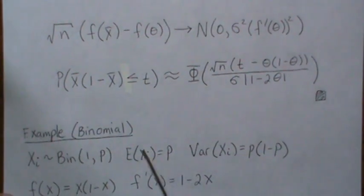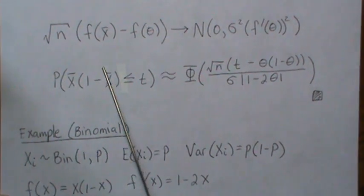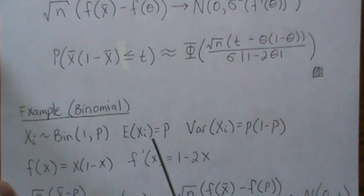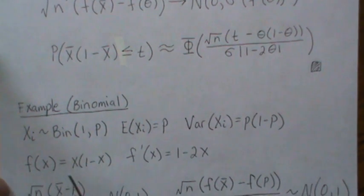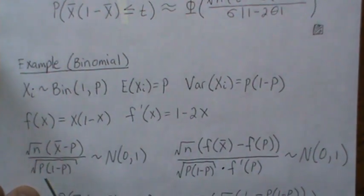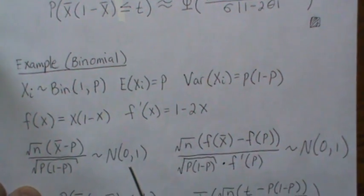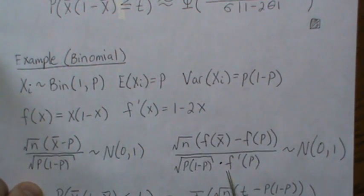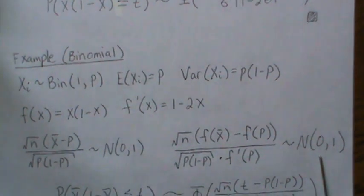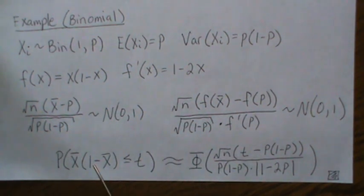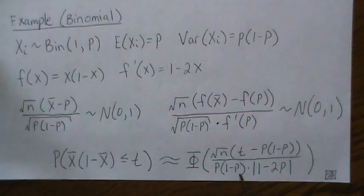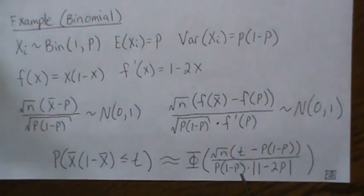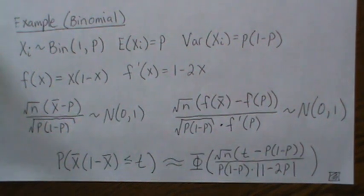Here's a more specific example using a binomial. If X is Bernoulli(1, p), the mean is p and the variance is pq. If we choose g(x) = sqrt(x(1-x)), we get its first derivative, and by the central limit theorem sqrt(n)(p-hat minus p) converges to normal(0,1). Then by the Delta method, g of p-hat divided by its standard deviation converges to normal(0,1). To find probabilities, we subtract the mean, multiply by sqrt(n), and divide by the standard deviation.